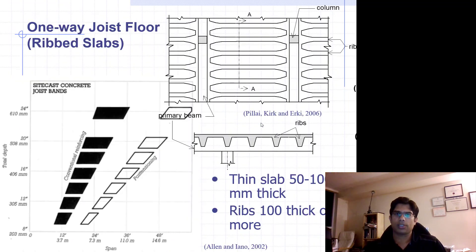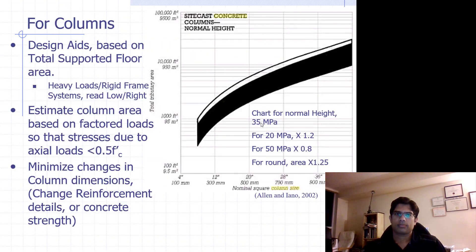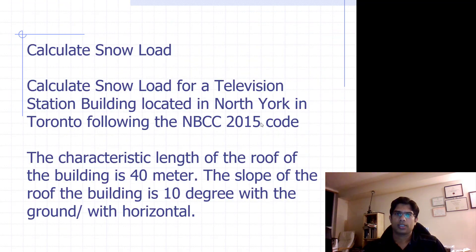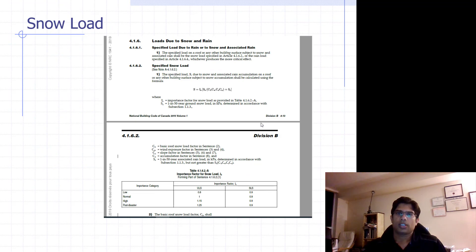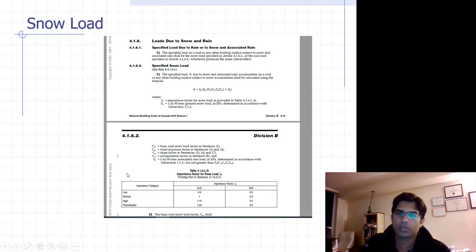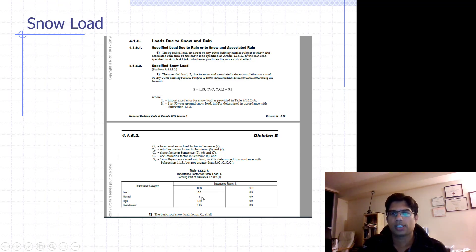Going back to the importance factor table, there are two columns: the first is for strength calculation and the second is for serviceability calculation. For strength calculation we use the factored load, and for serviceability we use the unfactored load.